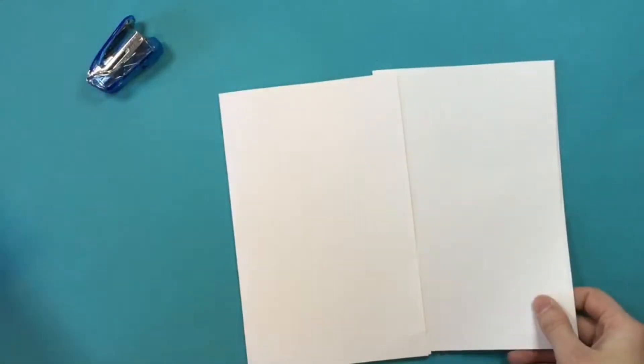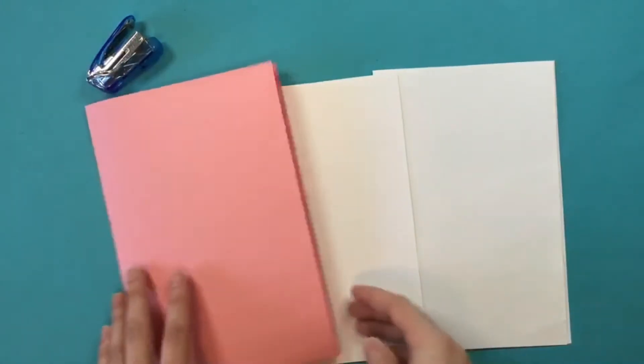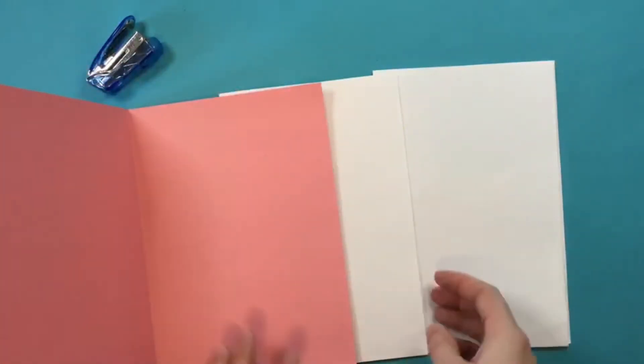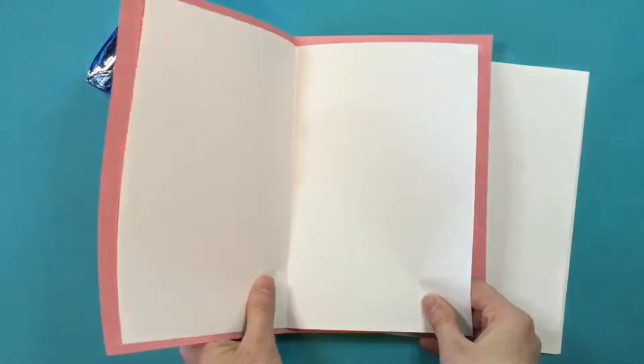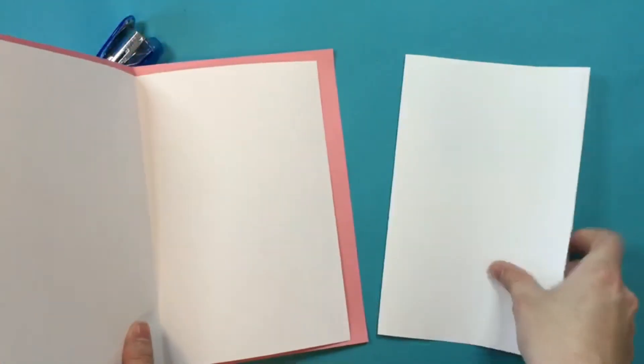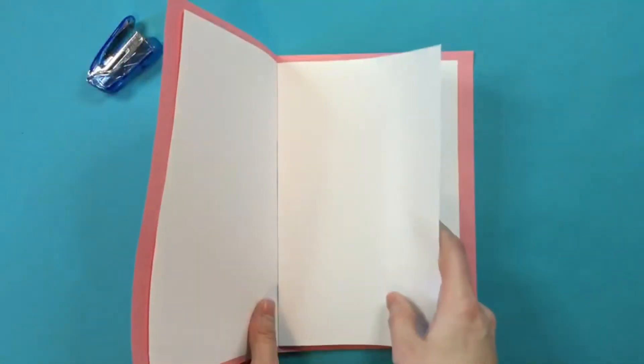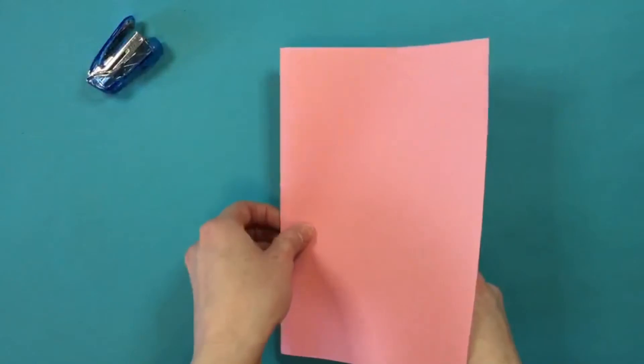Then you're going to take all of the papers that you're going to put into your sketchbook, and you want to open them up, and you want to take the crease of the paper and make the two creases touch so that they match. So they're all folding the same direction. And you're going to load all of the pages for your sketchbook inside.